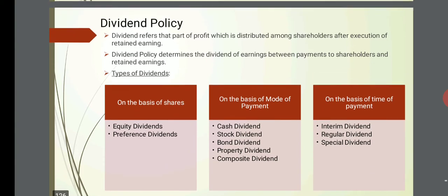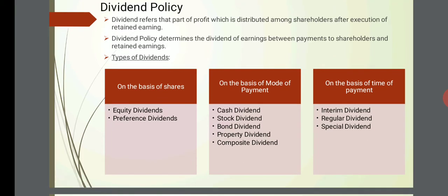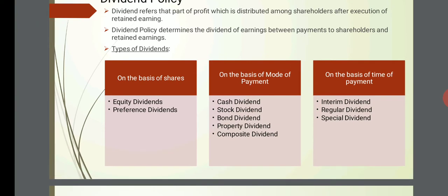Types of dividend: on the basis of shares, there are equity dividends given on equity shares and preference dividends given on preference shares. On the basis of mode of payment: cash dividend when given in cash, stock dividend when given in the form of stocks or bonus shares, bond dividend when given in bonds, property dividend when given as property, and composite dividend when multiple modes are used.